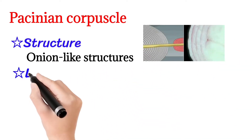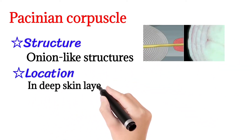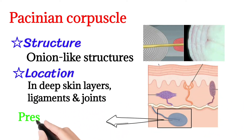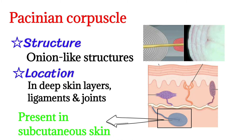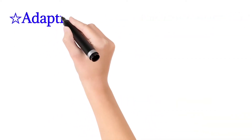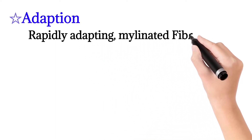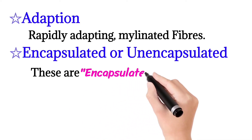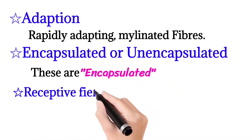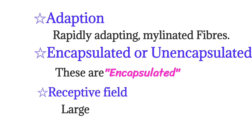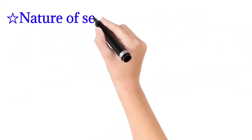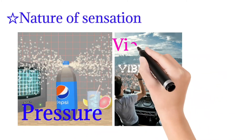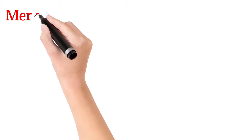The nature of sensation of Meissner corpuscles is fine touch, velocity, and sense of position. Then we will talk about Pacinian corpuscle structure, which is onion-like. Its location is present in deep layers, ligaments and joints, and also in subcutaneous skin. It is rapidly adapting and has myelinated fibers, and these are encapsulated. The receptive field is large, and the nature of sensation is pressure and vibration.